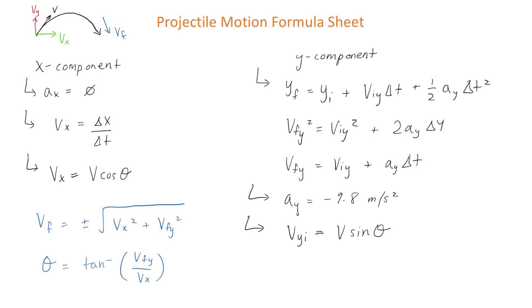Since the y component represents free fall motion, the acceleration is equal to negative 9.8 meters per second squared. And for an object that is thrown up into the air, the initial velocity in the y component is equal to v sin theta.